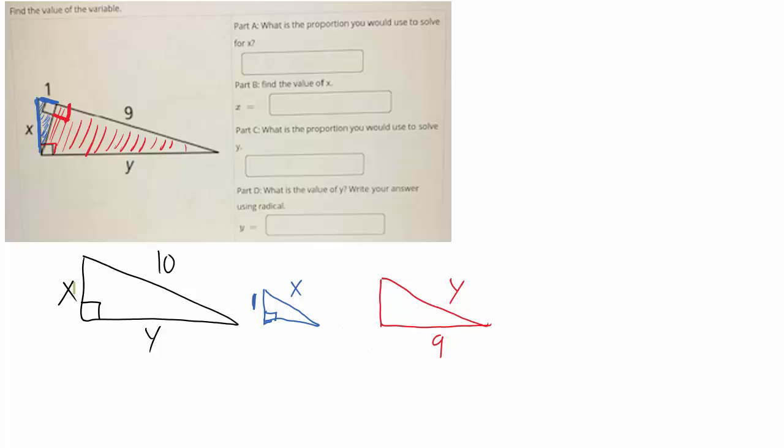So let's look at x. Short over short is equal to hypotenuse over hypotenuse. So the proportion I can draw is x over 1, short over short, equals 10 over x which is hypotenuse over hypotenuse. That means I can cross multiply so I get x squared equals 10. So if I solve for x by taking the square root of both sides, x is equal to the square root of 10.